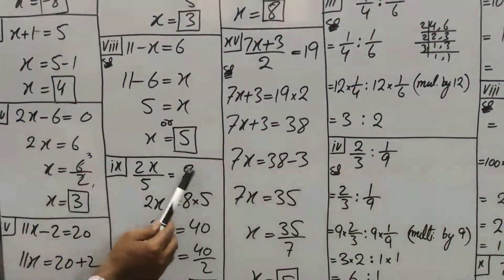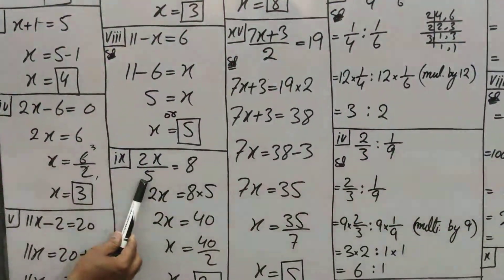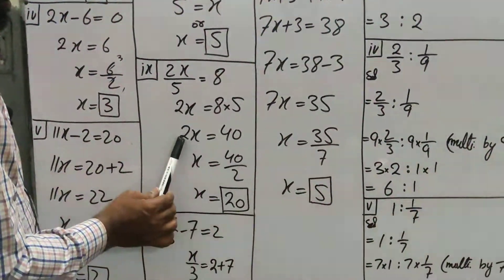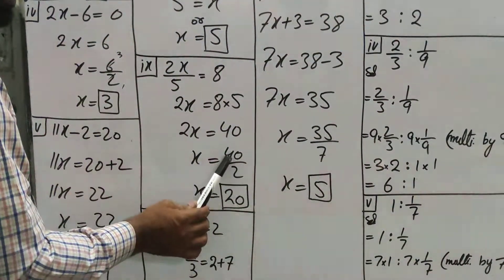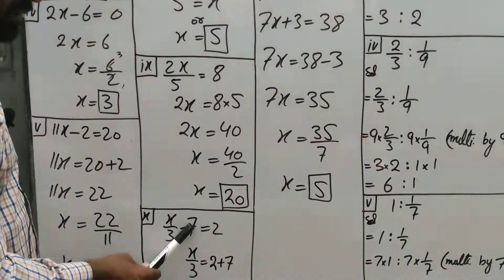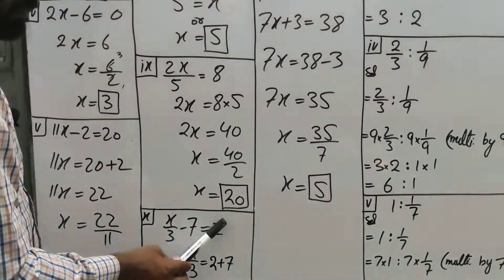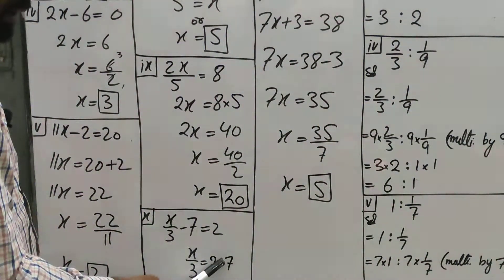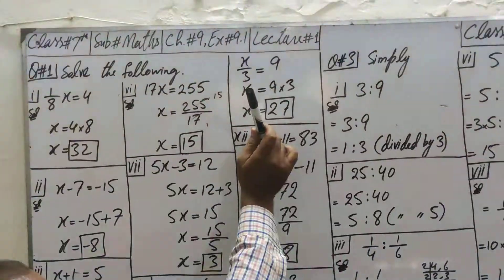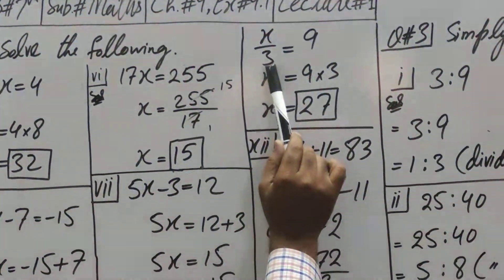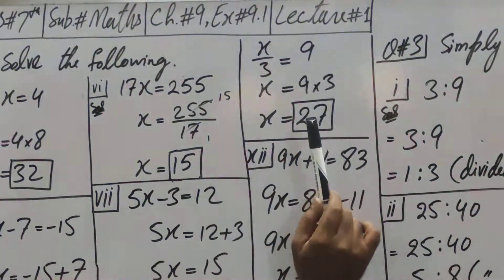2x/5 = 8. 5 is dividing here, so multiply. 8 × 5 = 40. 2 is multiplying here, so divide. Cutting gives 20. Next part: x/3 - 7. This -7 will be +7. 2 + 7 = 9. x/3 = 9. You can see in the next column. x/3 = 9, 3 is dividing, so multiply. 9 × 3 = 27.